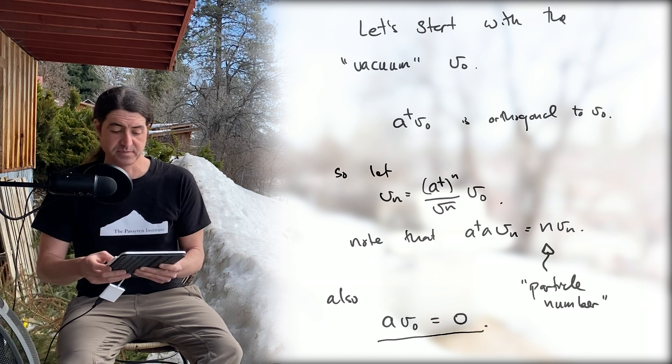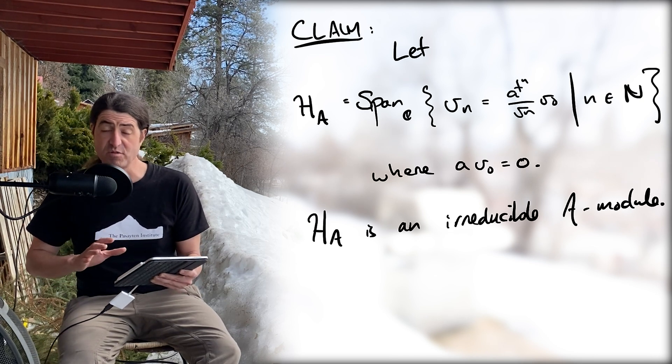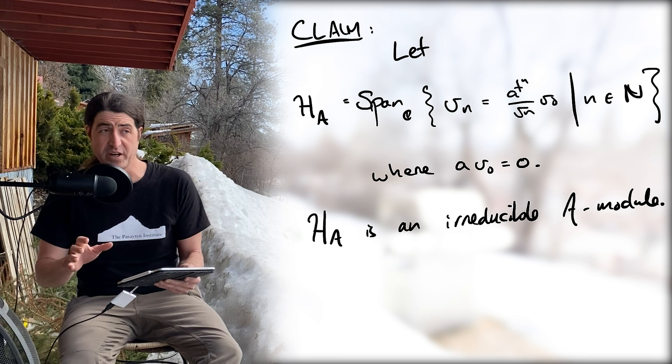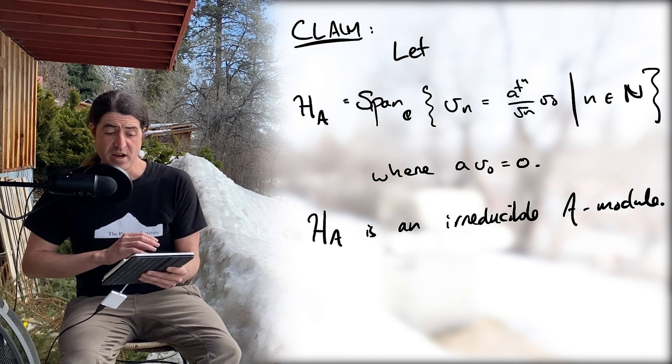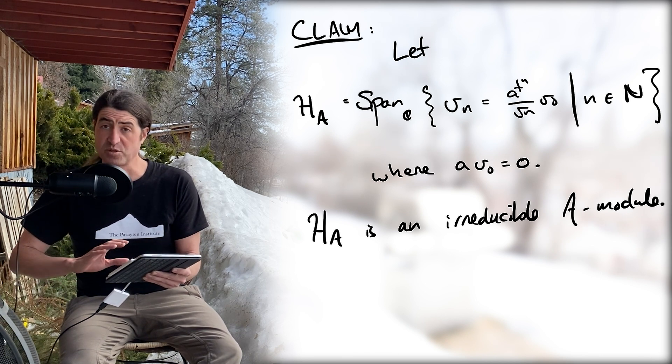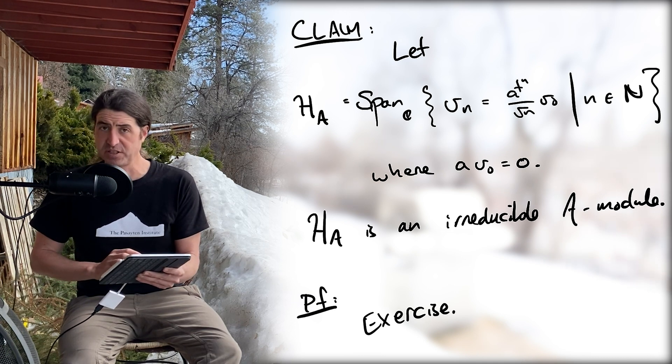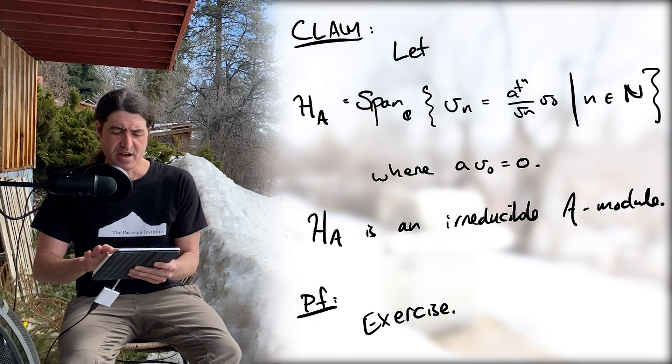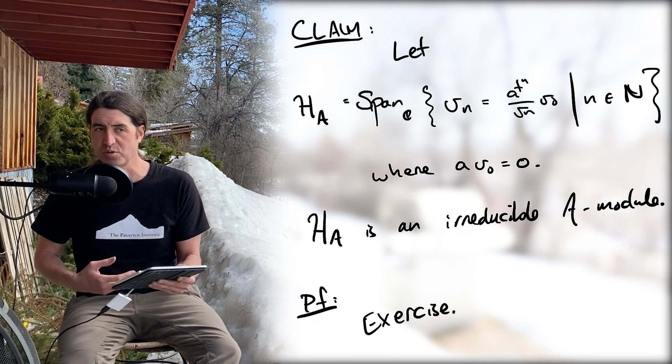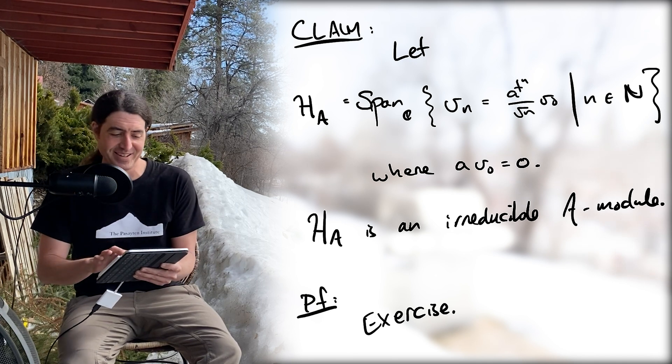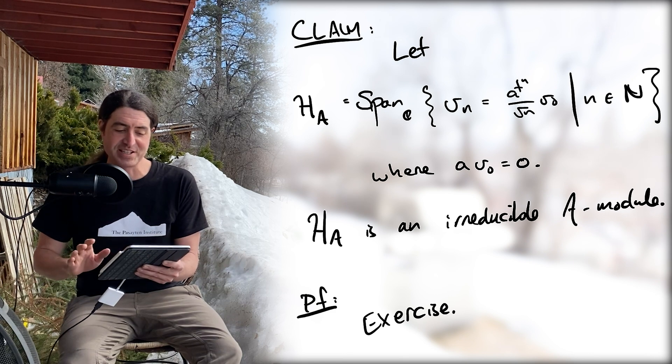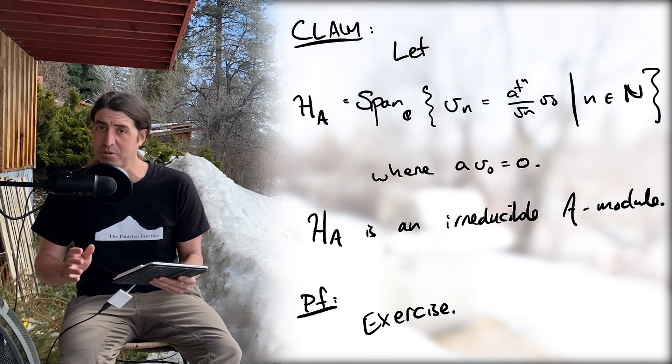This sets us up for our first claim: the set of all v_n, where n is a natural number, forms an irreducible representation of the algebra A. I leave that proof to you as an exercise—it's really not that hard. Let's call this module H of A.